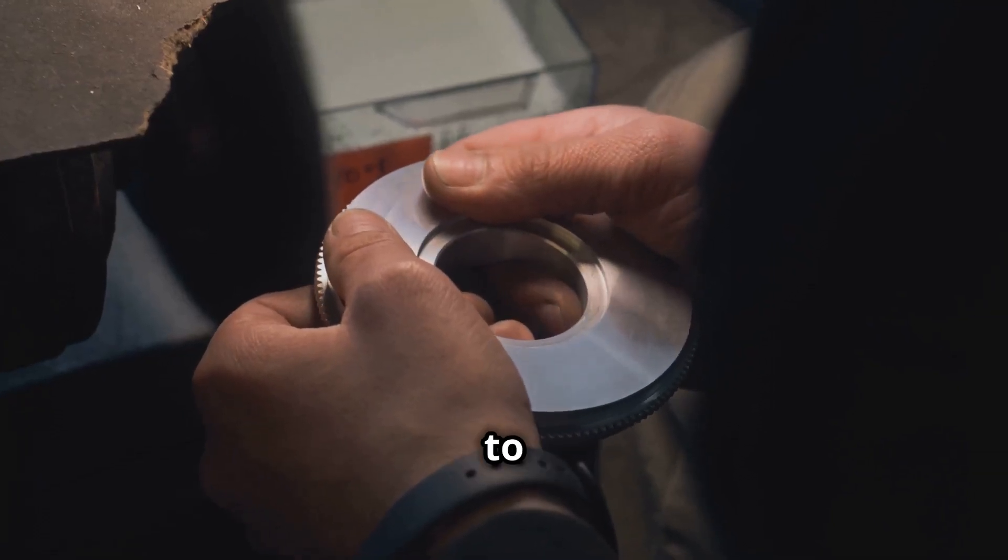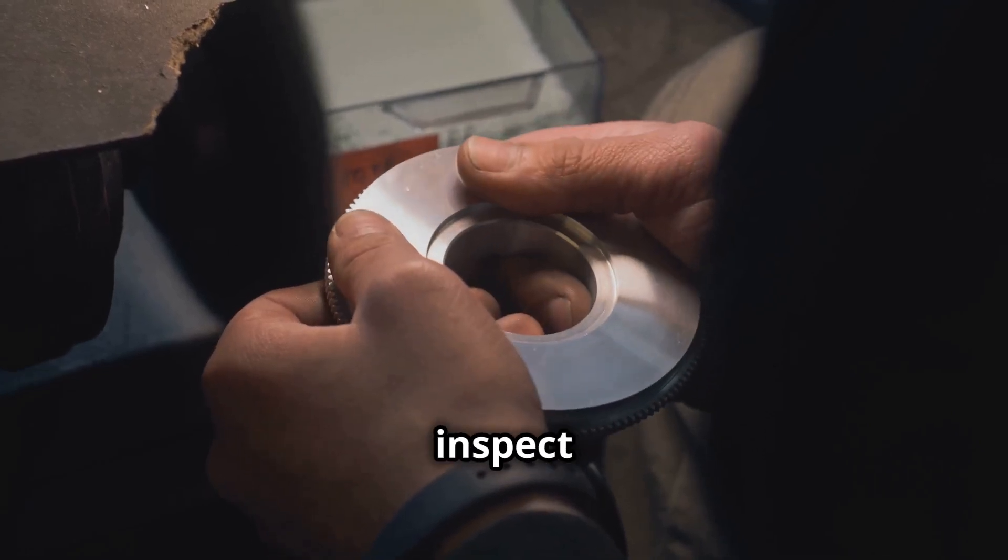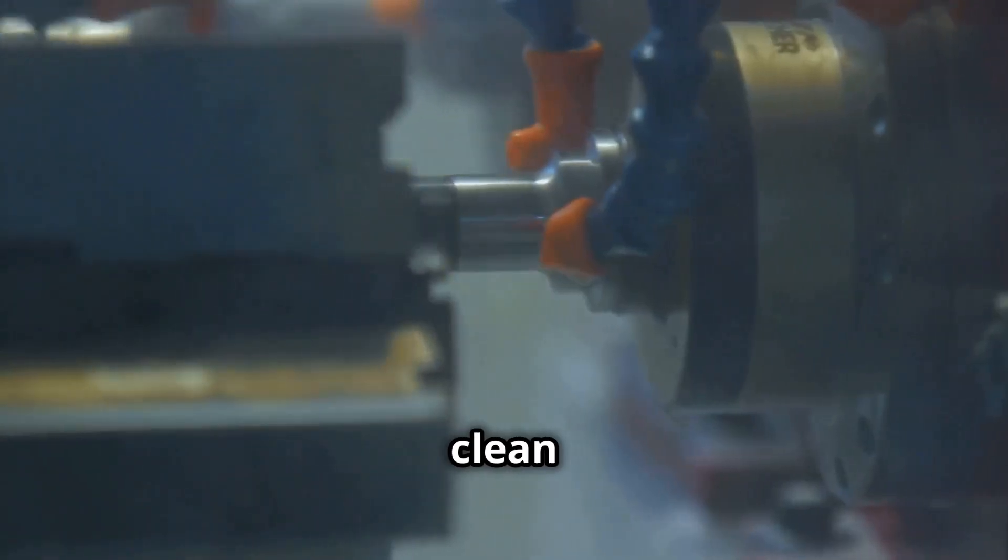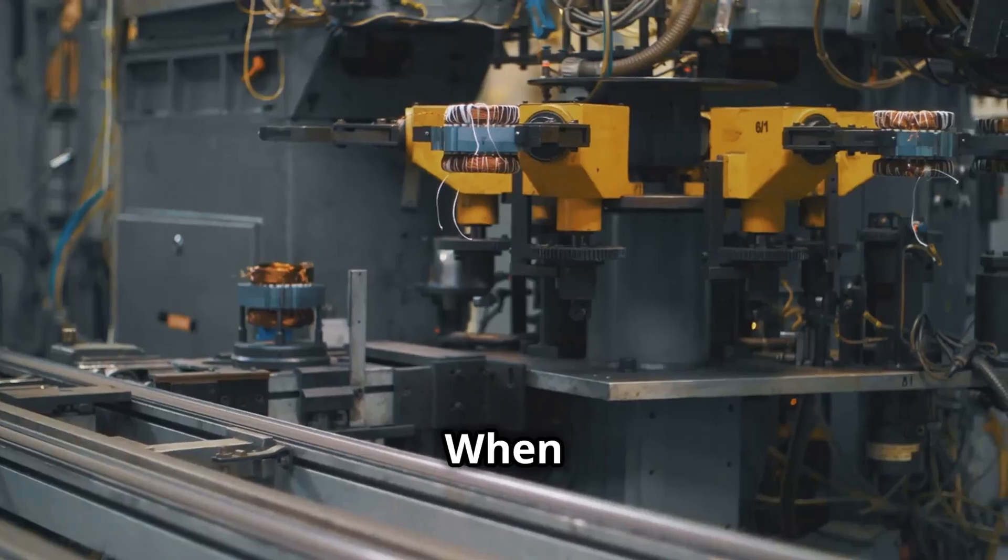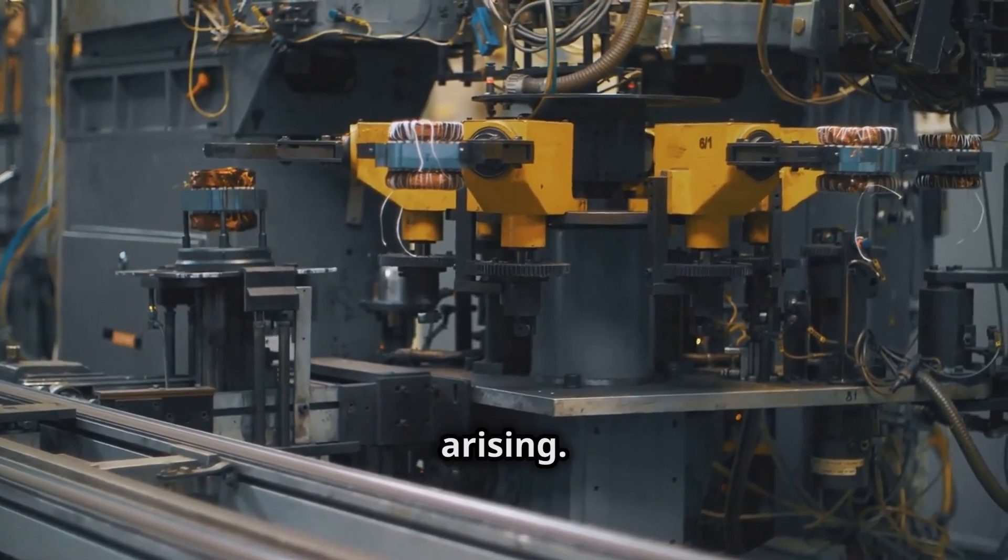First up, we've got clean to inspect. This step is crucial because a clean machine is easier to inspect and maintain. A clean machine is a happy machine. When you keep your equipment clean, you're not just making it look good, you're also preventing potential issues from arising.